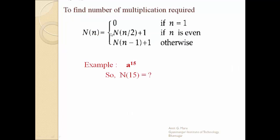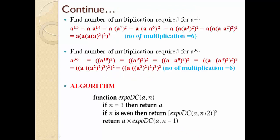Now, is it possible to identify how many multiplications are required using another recurrence? Yes — we have another recurrence to directly identify how many multiplications are required for a raised to n. So every time it is not required to manually check multiplications and squarings. The recurrence equation N(n) is defined as: N(n) equals 0 if n equals 1; N(n by 2) plus 1 if n is even; and N(n minus 1) plus 1 otherwise. This function directly returns the number of multiplications for a raised to n.